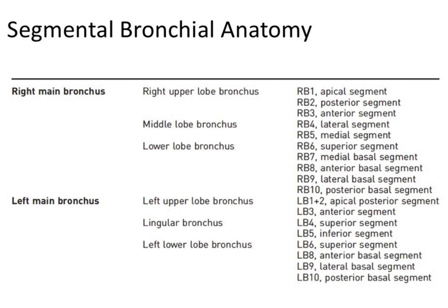On the left we have the left upper lobe bronchus, with a little bit different anatomy: the RB1 plus 2, joined and called the apical posterior segment, then the RB3, the anterior segment, then the lingula, which is also part of the upper lobe, with the RB4, the superior segment, and the RB5, the inferior segment.